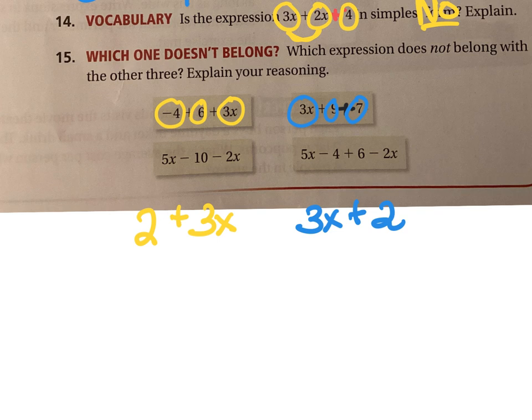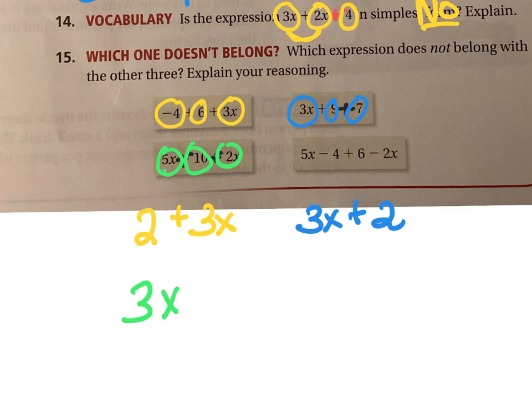Let's look at the third one. I'm going to change it to plus negative 10 and plus negative 2x. My terms are 5x, negative 10, and negative 2x. The 5x and negative 2x go together, giving me 3x, and then negative 10 is a constant, so I add negative 10. That one looks different than the other two, so this one might be it.